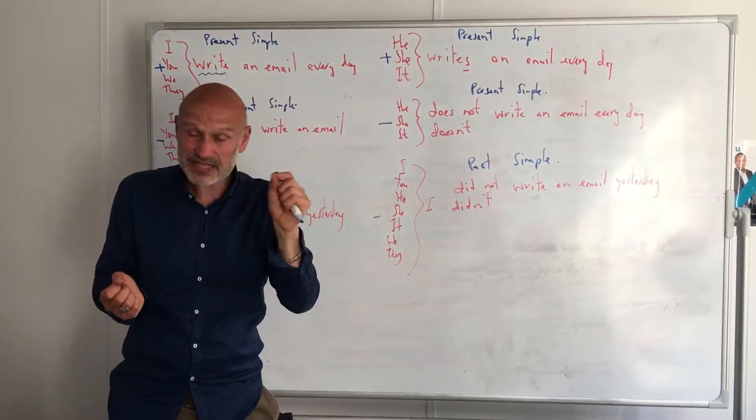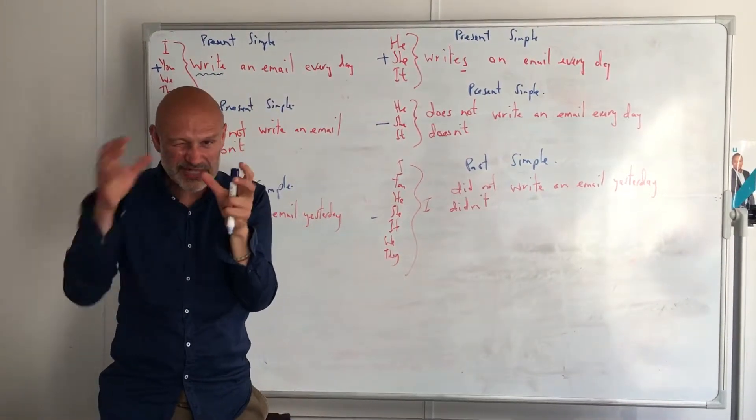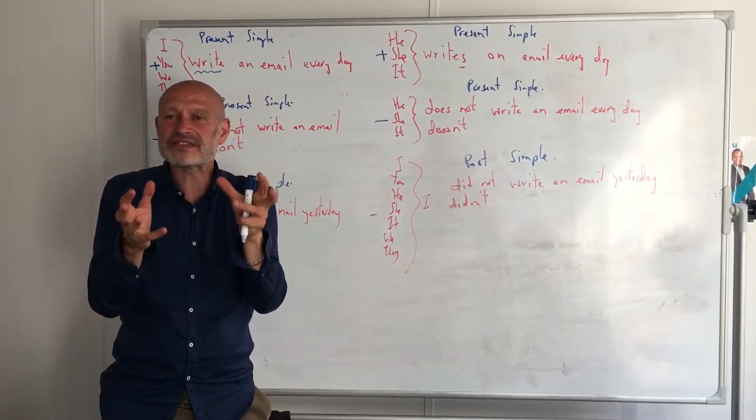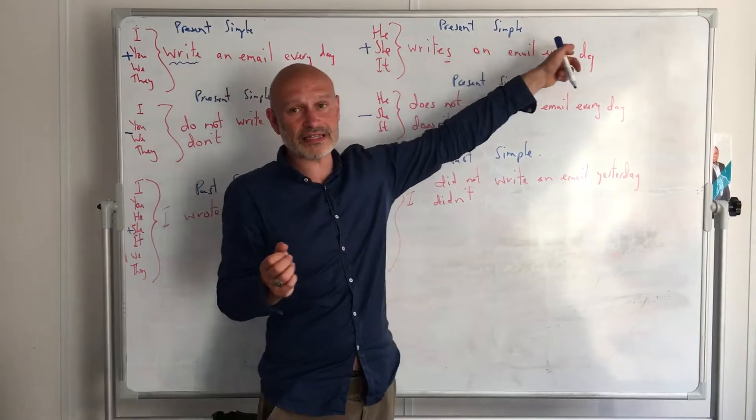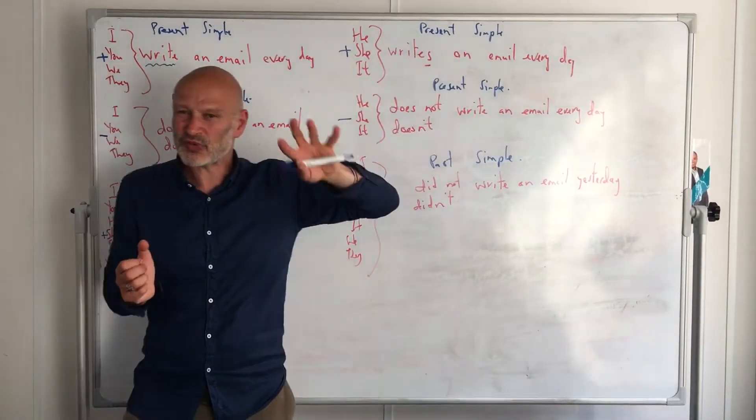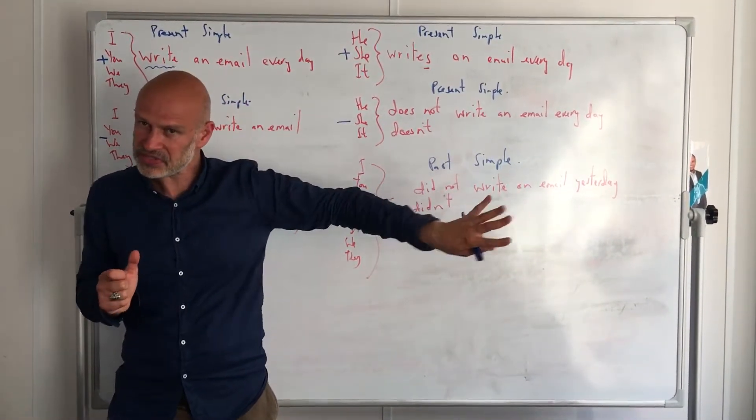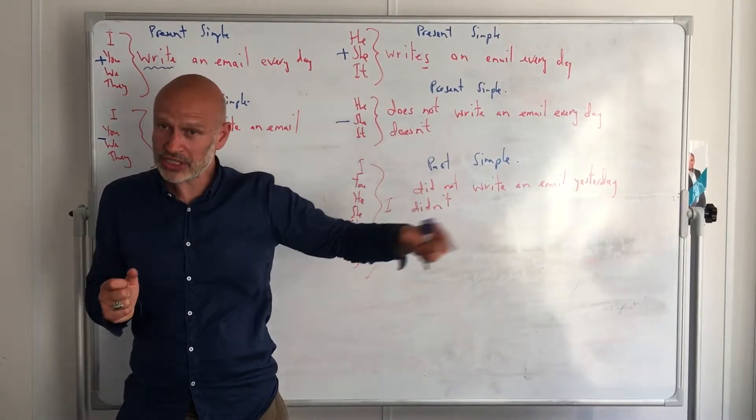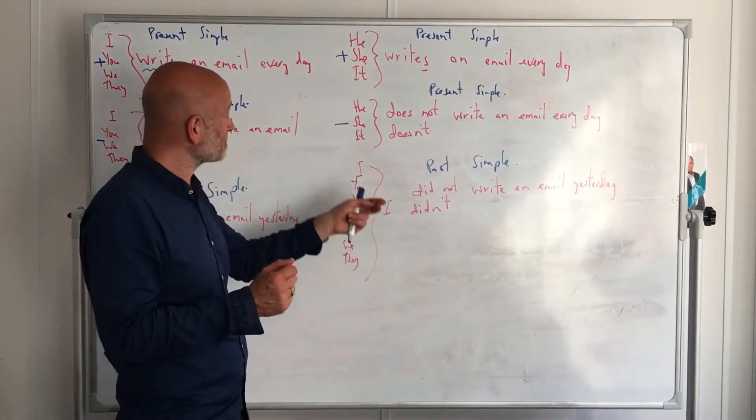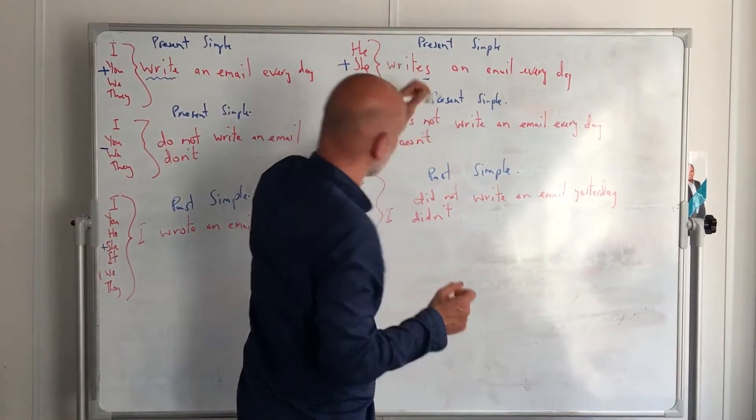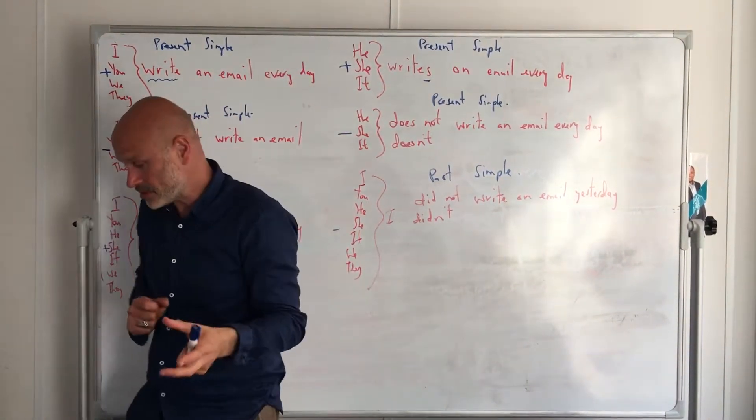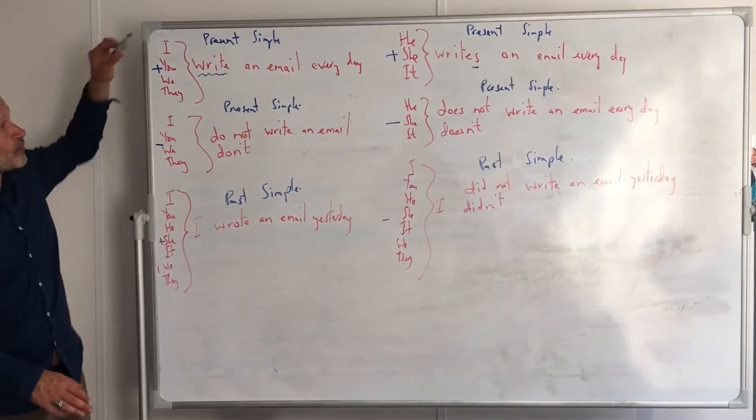Sometimes it's just the letter S, sometimes it's ES, and sometimes it's IES, but it's basically the sound S or Z. So 'he writes an email every day' or 'she writes an email every day.' It's all about talking about somebody else: he, or she, or it. So we just have to remember this little S at the end, or the sound.